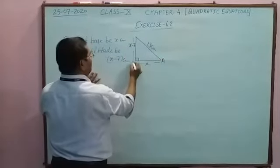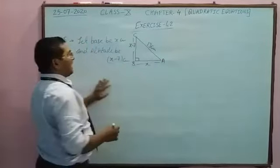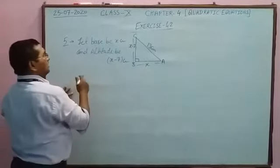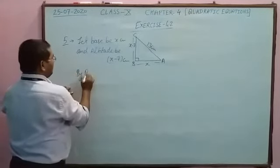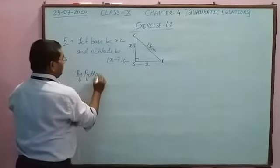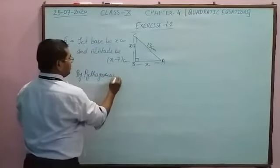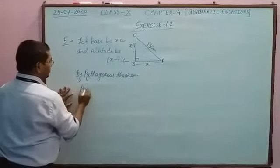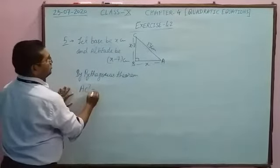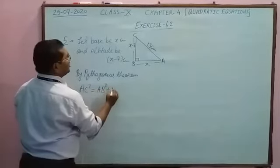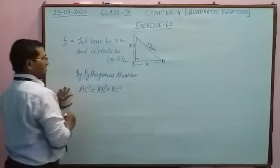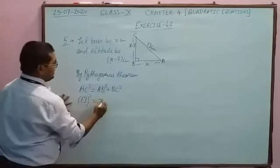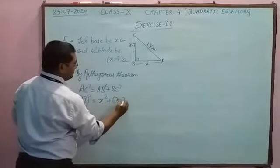To find the two sides, we use the Pythagoras theorem. The Pythagoras theorem states: hypotenuse squared equals base squared plus altitude squared, that is AC² = AB² + BC².